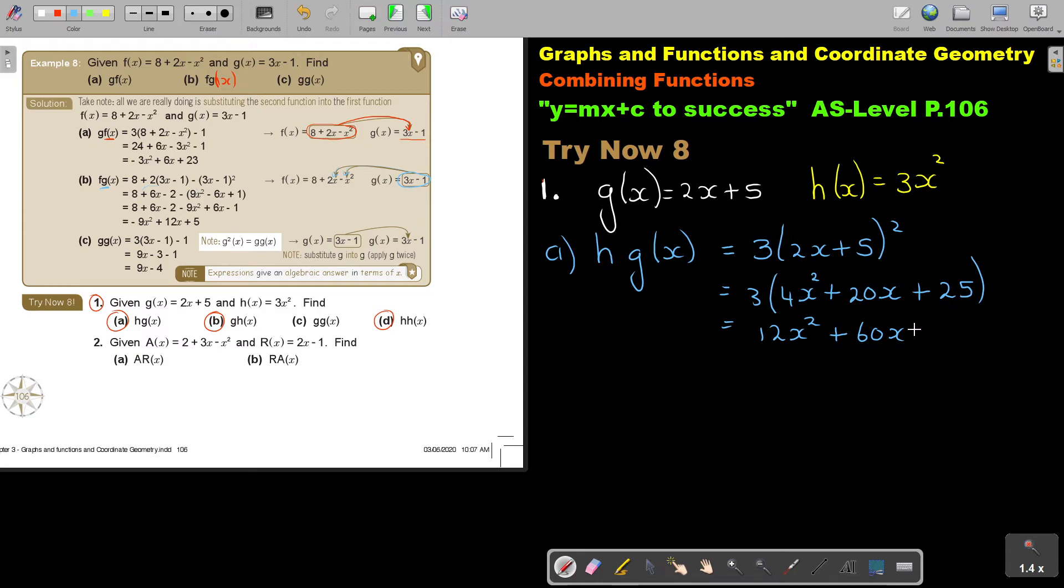So it's 12x squared plus 60x plus 25. Ach, 3 times 8 plus 75. Okay, let's do the next one. Number B.